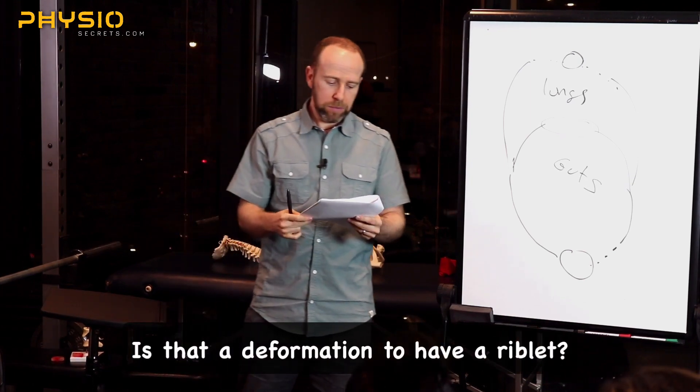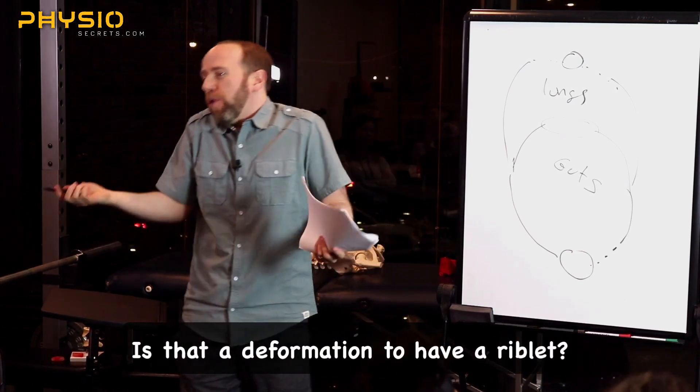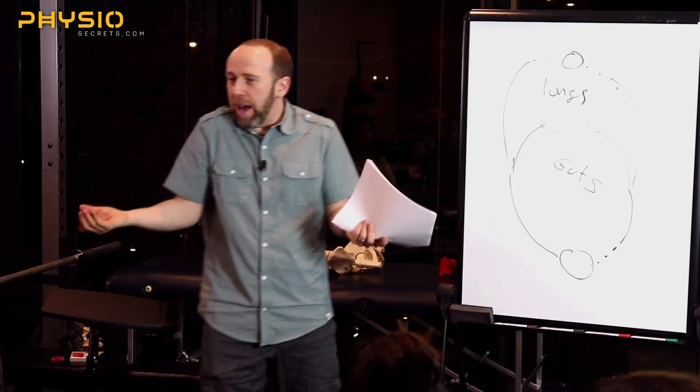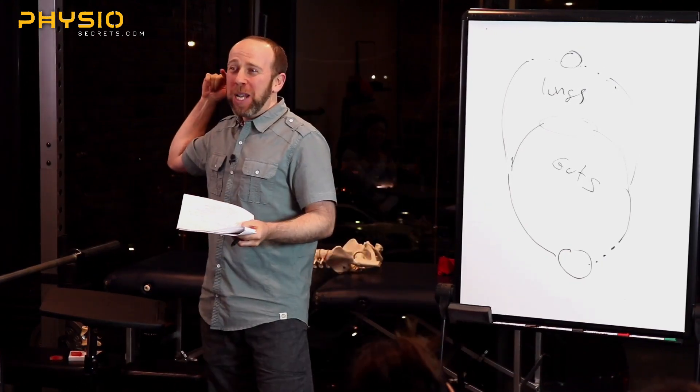Is that a deformation to have a riblet? Yes. Well, deformation. It's like congenital. It's a congenital anomaly, like some people have it. Okay. Let me wind up.